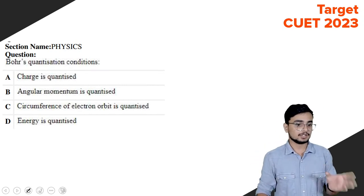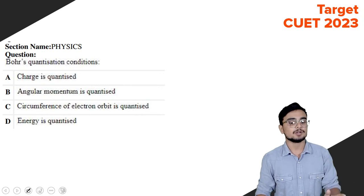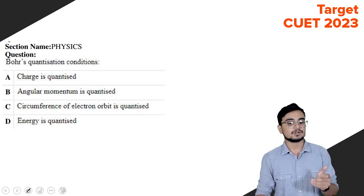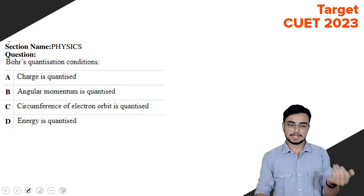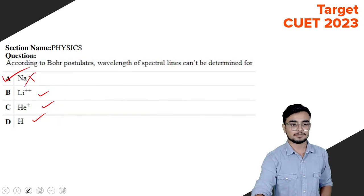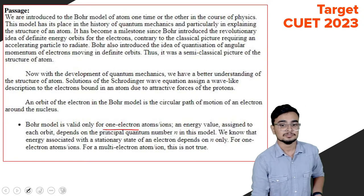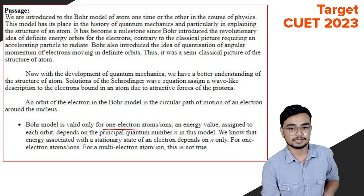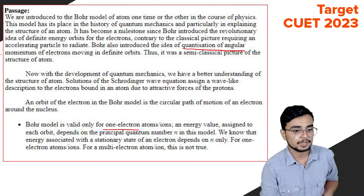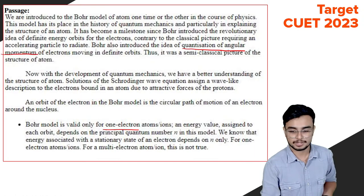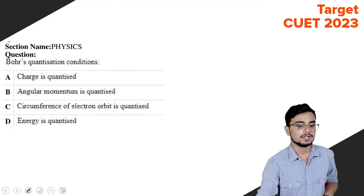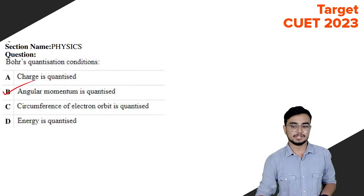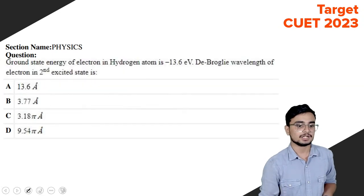Regarding quantization conditions: charge is quantized, angular momentum is quantized, circumference of the electron orbit is quantized, and energy is quantized. The question asks about quantization of angular momentum in the passage, so the correct answer is option B.